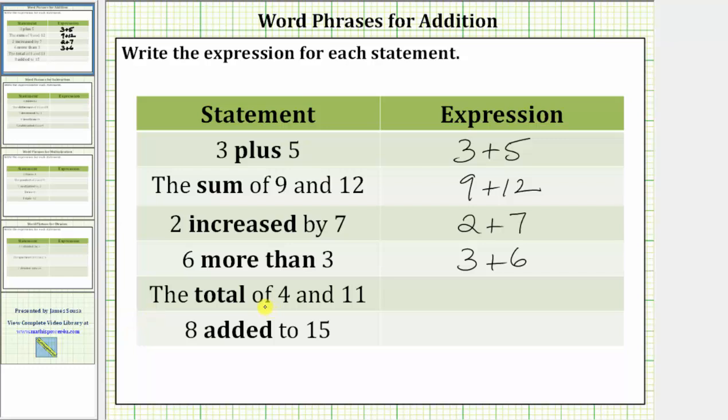The next expression is the total of four and 11. To find the total of two numbers, we add. The expression is four plus 11.